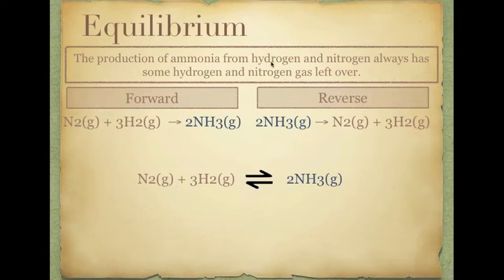Production of ammonia from hydrogen and nitrogen always has some hydrogen and nitrogen gas left over when it reaches equilibrium. We have a forward reaction here, where we have nitrogen and hydrogen forming ammonia. We also have a reverse reaction, where ammonia breaks apart into nitrogen and hydrogen. We can combine these two and use this little guy here, this arrow, which is forward and back, which is known as our equilibrium arrow. This is our equilibrium reaction, our chemical equation, for the Haber process, the production of ammonia, where we have going forward and going backwards.